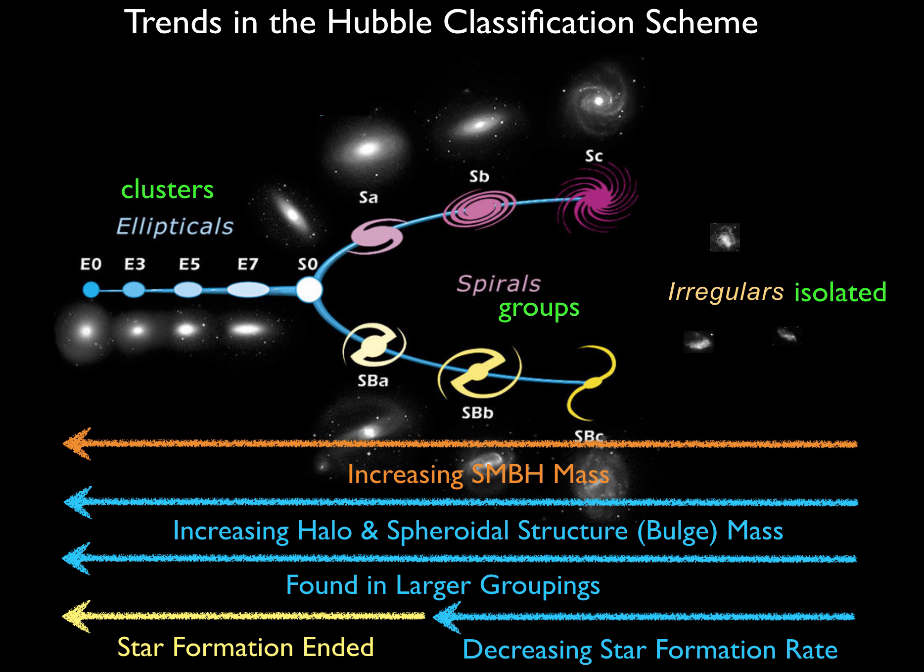Recall the trends in galaxies from Chapter 20. Going from irregular galaxies on the far right through spirals, which includes barred spirals, to E0 ellipticals on the left: galaxies have larger supermassive black hole masses, larger dark matter halos and central bulges, they are found in larger galaxy groupings, and they have decreasing rates of star formation. Elliptical galaxies can be thought of as being all central bulge with no disk structure. Galaxies to the left of S3 are no longer forming new stars.